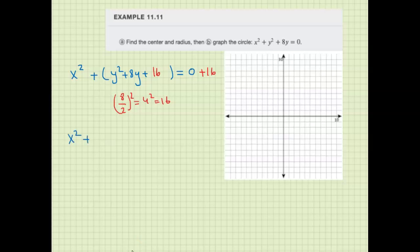So we have x squared. This one we factor as y plus 4 squared, and then 0 plus 16 gives me 16.